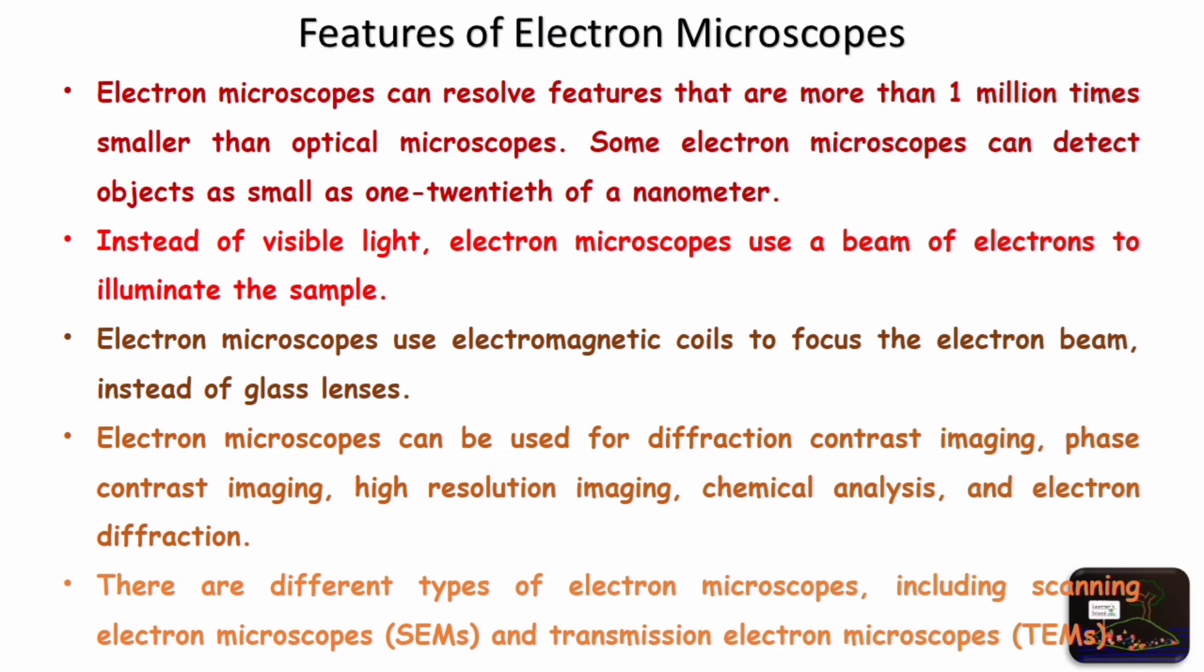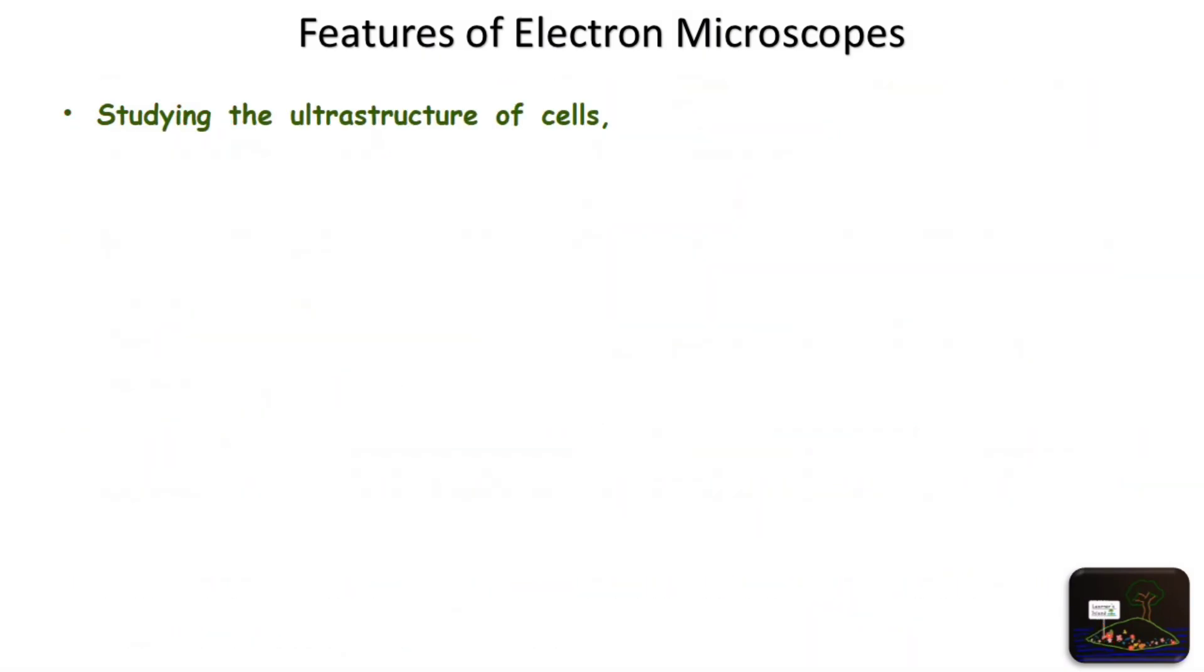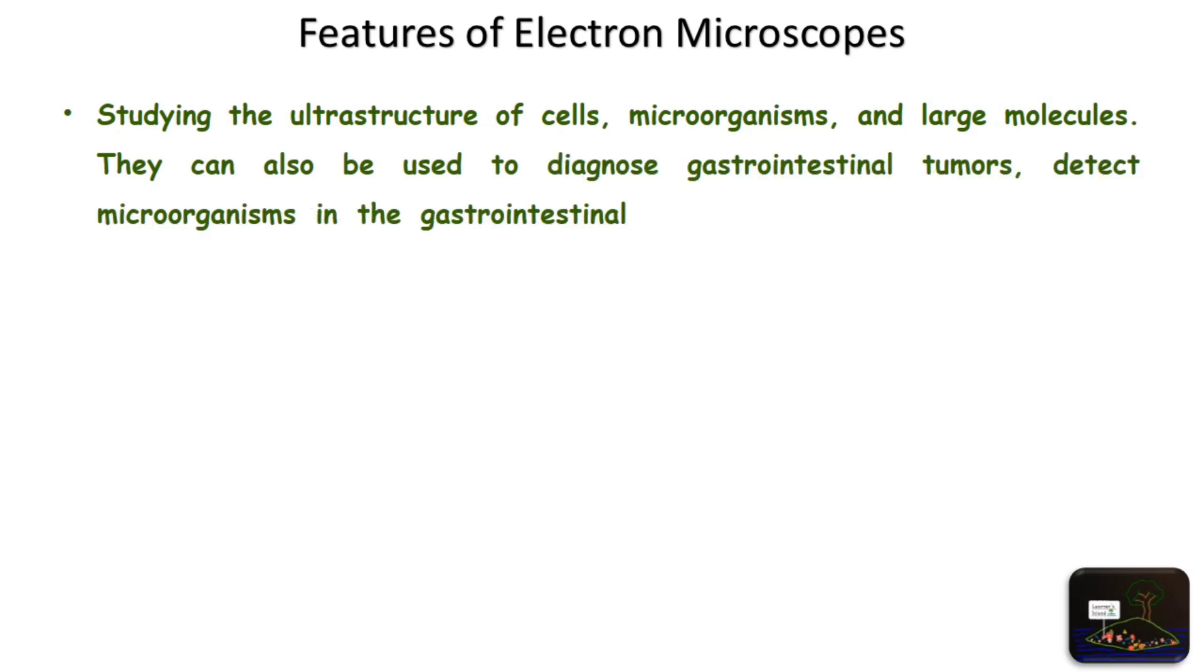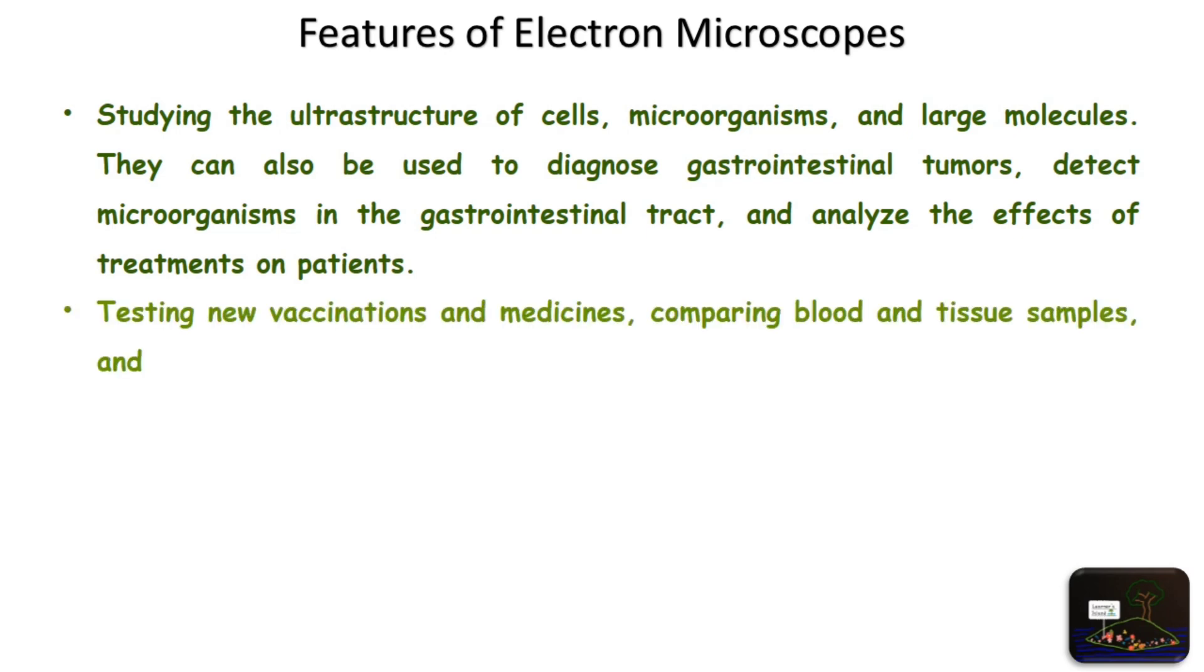Let us see where exactly electron microscope is needed. Studying the ultrastructure of cells, microorganisms, and large molecules. To diagnose gastrointestinal tumors, detect microorganisms in the gastrointestinal tract, and analyze the effects of treatments on patients. Testing new vaccinations and medicines, comparing blood and tissue samples, and identifying diseases and viruses.